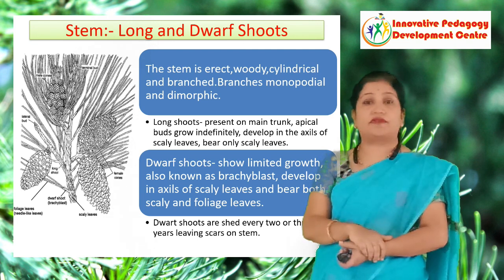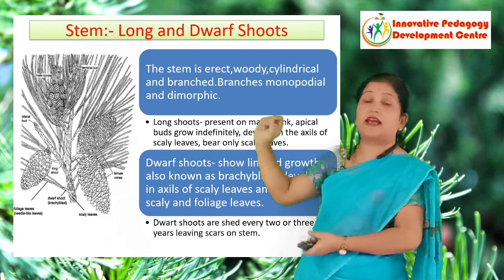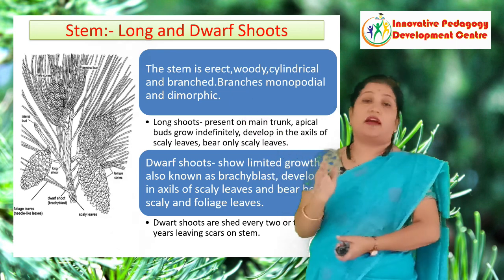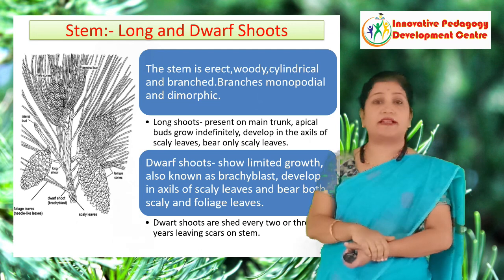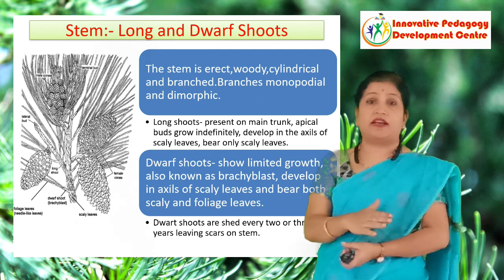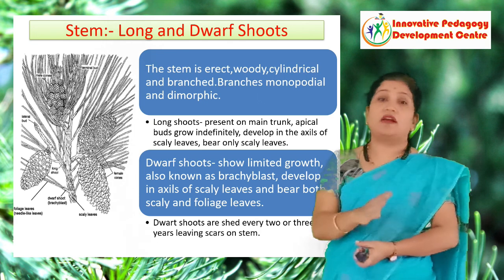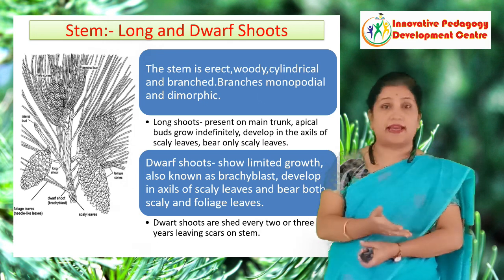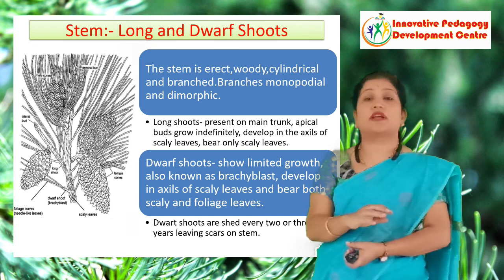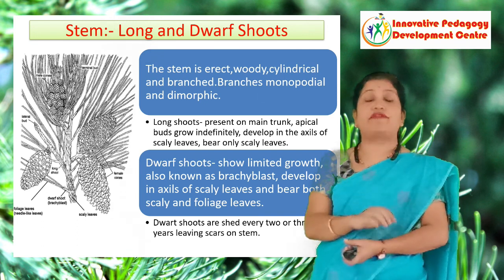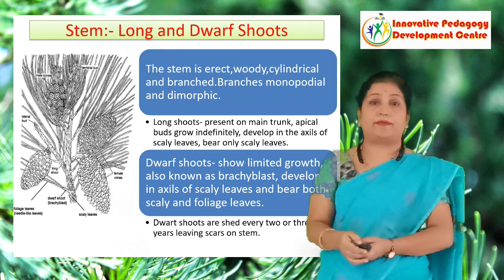Then there are dwarf shoots, also known as brachyblasts. These do not have an apical bud, so their growth is limited. These dwarf shoots bear two types of leaves and they leave scars on the same.